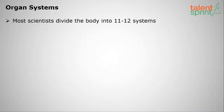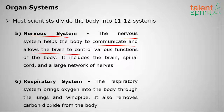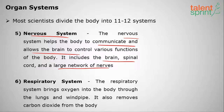The fifth organ system is the nervous system. The nerves help the body communicate and allow the brain to control various functions of the body. It includes the brain, spinal cord, and a large network of nerves.